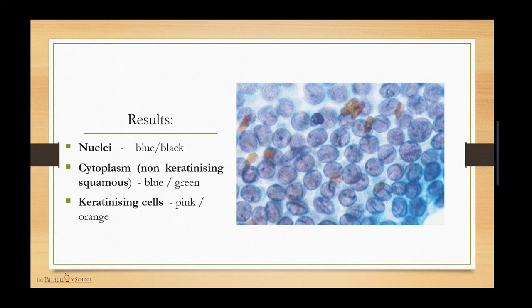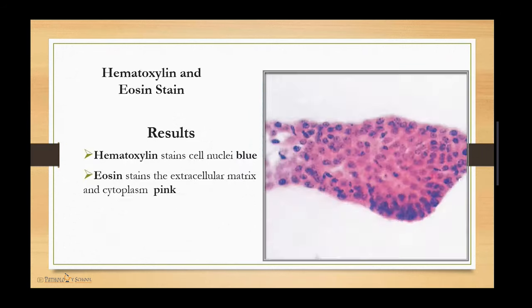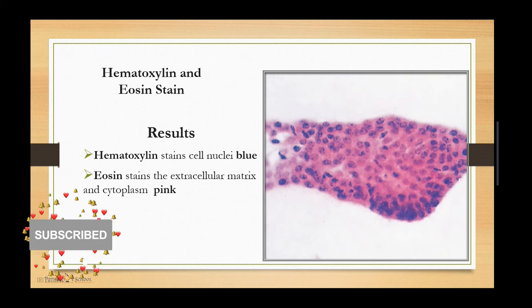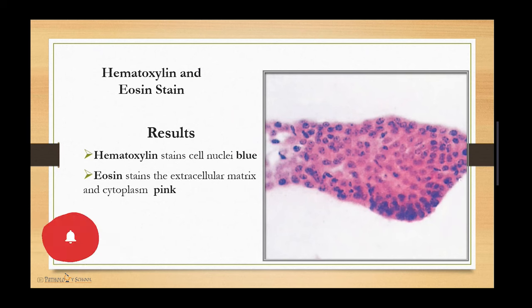Papanicolaou stain is best for studying nuclear features. Nuclei appear blue or black; cytoplasm of non-keratinizing squamous cells appears blue or green, while keratinizing cells appear pink or orange. In Hematoxylin and Eosin staining, Hematoxylin stains cell nuclei blue and Eosin stains the extracellular matrix and cytoplasm pink.